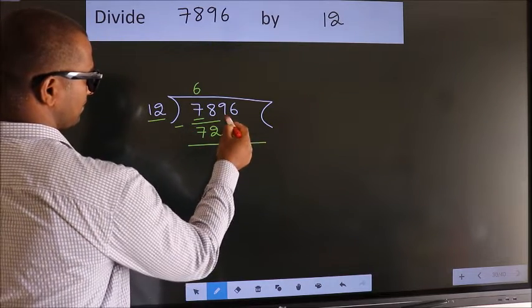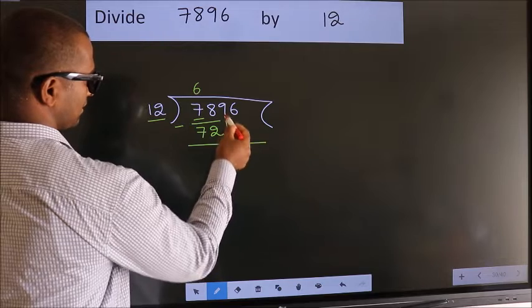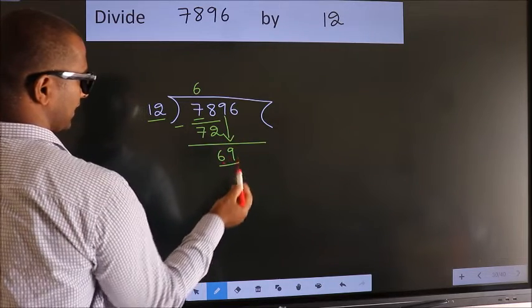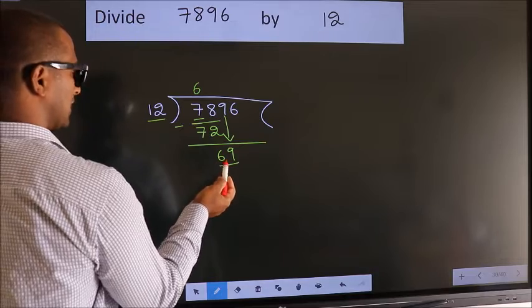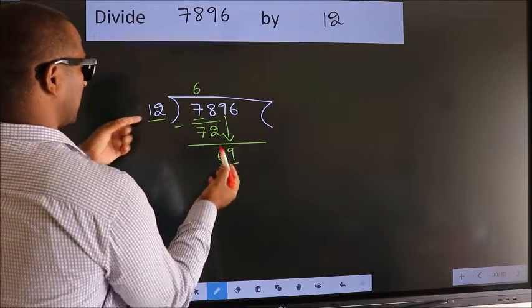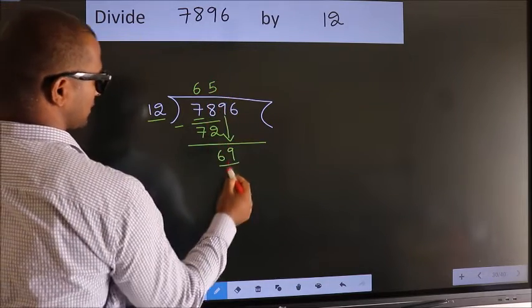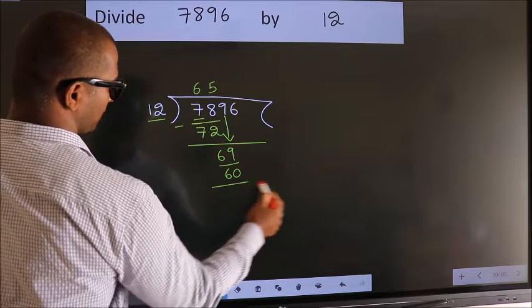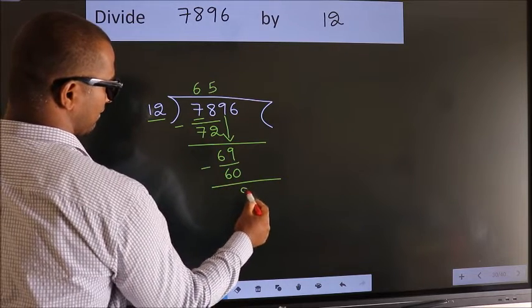After this, bring down the beside number. So 9 down, 69. A number close to 69 in the 12 table is 12 times 5, 60. Now we subtract. We get 9.